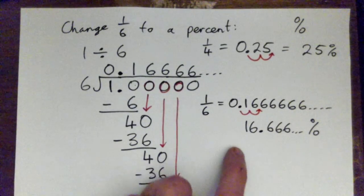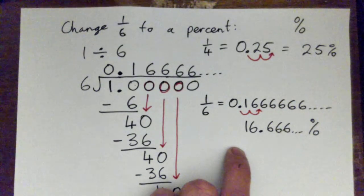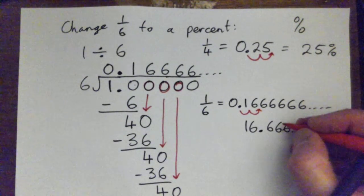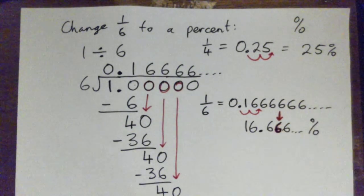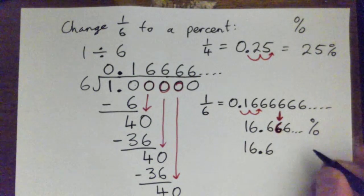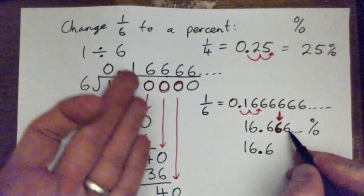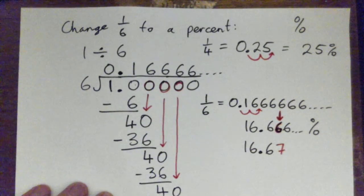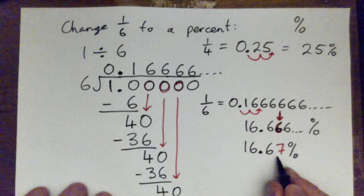The only question is how far do they want us to round it? Let's say they wanted to round it to two decimal places — as far as this digit here. So we have 16.6, and the digit after that is six, which is five or more, so we round up and that becomes a seven. Rounded to two decimal places as a percentage, that's 16.67%.